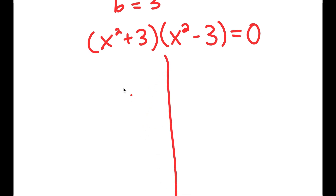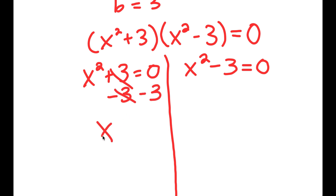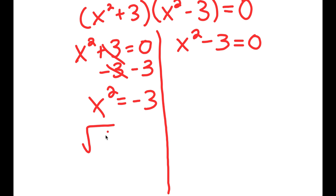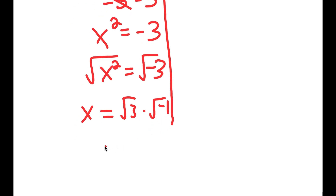This gives two equations. First, x squared plus 3 equals 0. Subtracting 3 from both sides gives x squared equals negative 3. Taking the square root of both sides, the square root of negative 3 equals the square root of 3 times the square root of negative 1. Since the square root of negative 1 is i, I get x equals positive or negative square root of 3 times i.